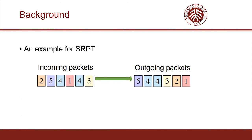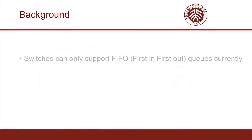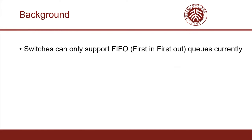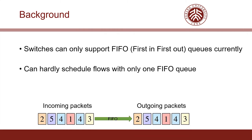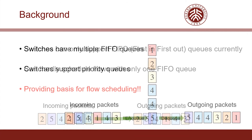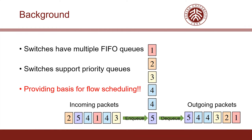We show an example of flow scheduling following SRPT. The value in the blocks is the corresponding remaining flow size, and the optimal scheduling is shown in the figure. Nowadays, commodity switches can only support FIFO queues, and a single FIFO queue can hardly schedule flows. Luckily, switches have multiple FIFO queues and also support priority queues, which provides the basis for flow scheduling. As shown in the figure, multiple FIFO priority queues can achieve flow scheduling.